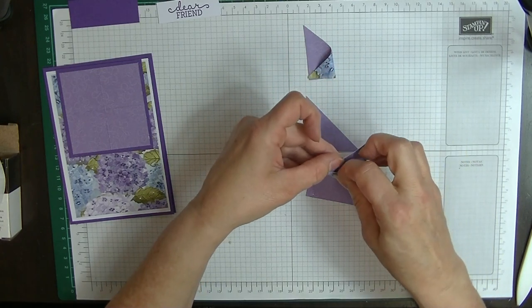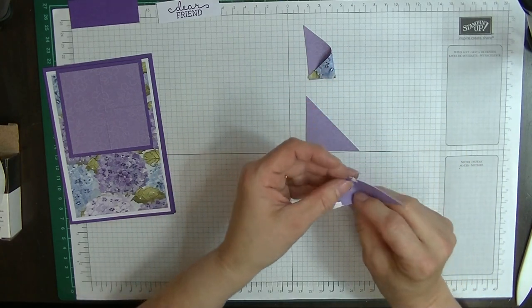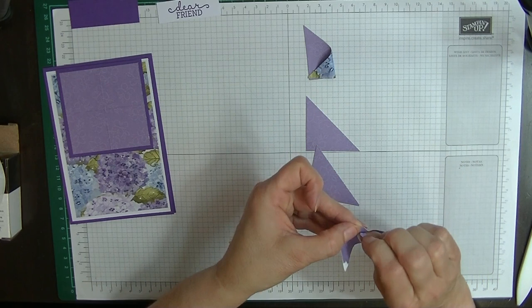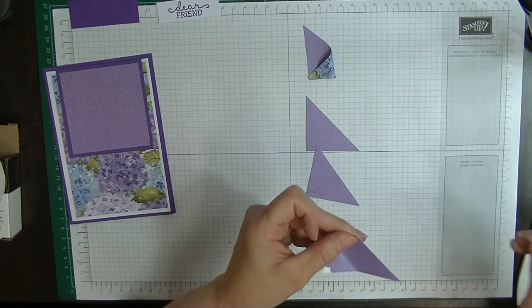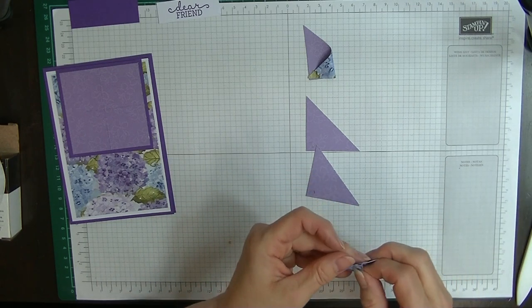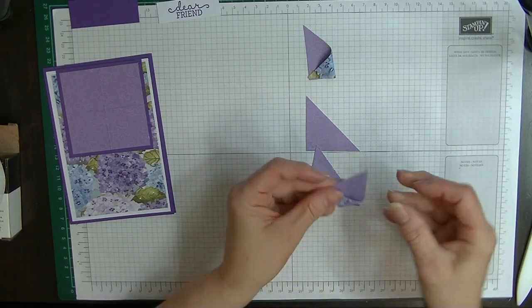Now what we're going to do is we're going to grab this and we're going to just with our thumb, we're going to just give it a bit of a squeeze across and we're going to bring it across like so.